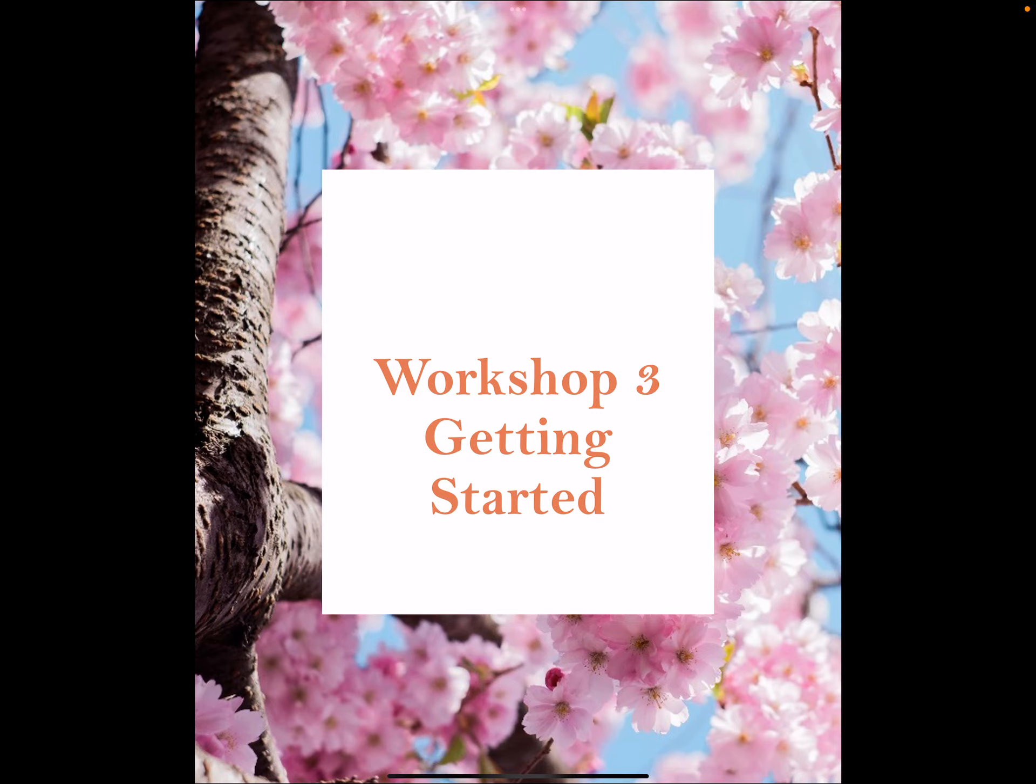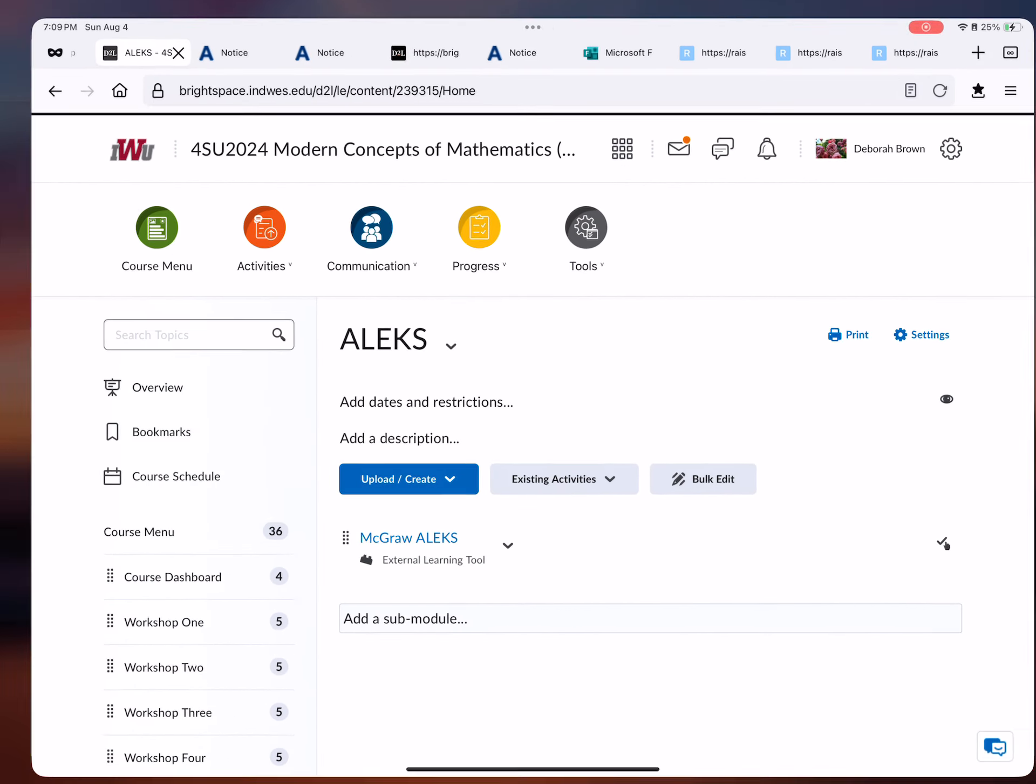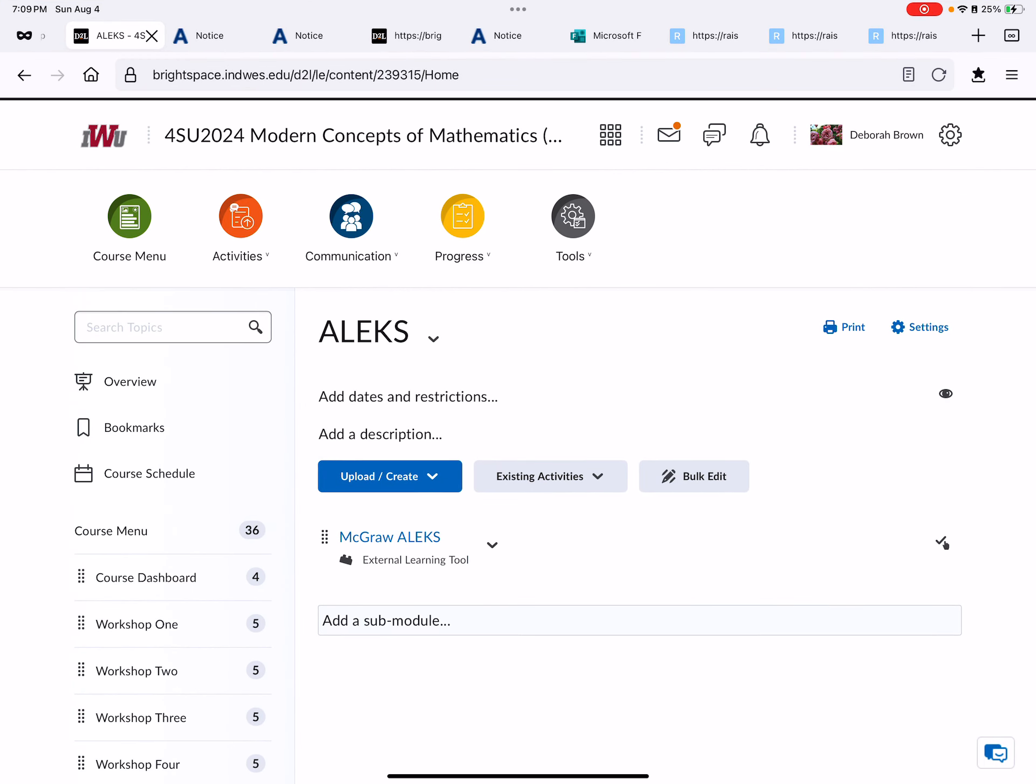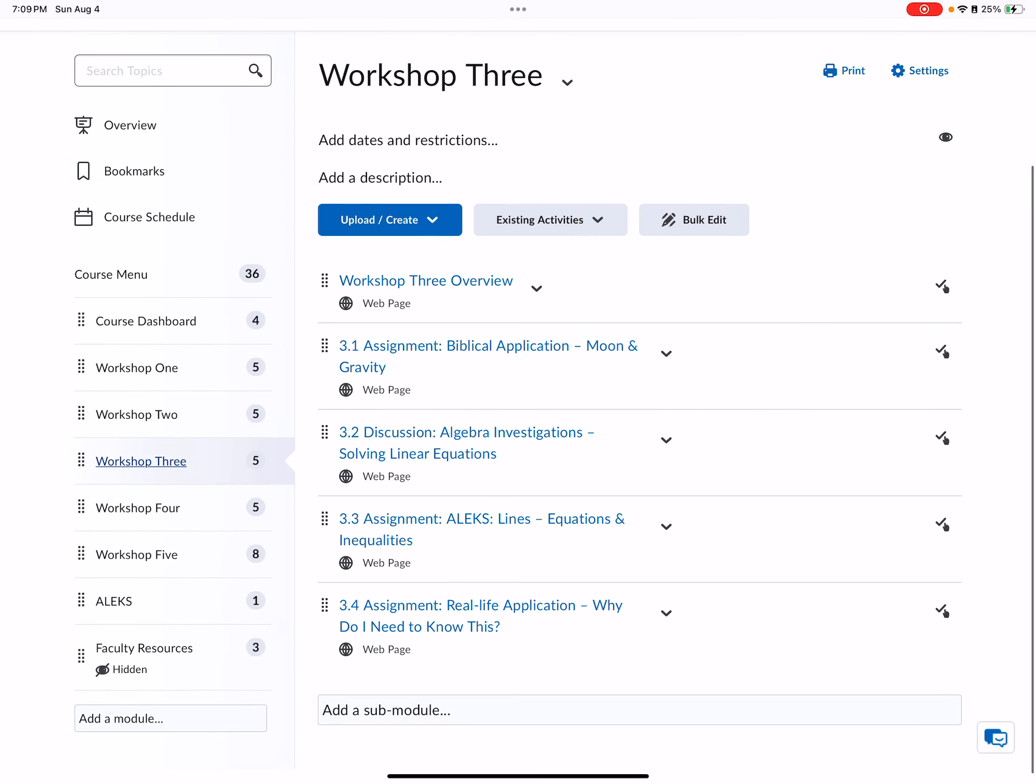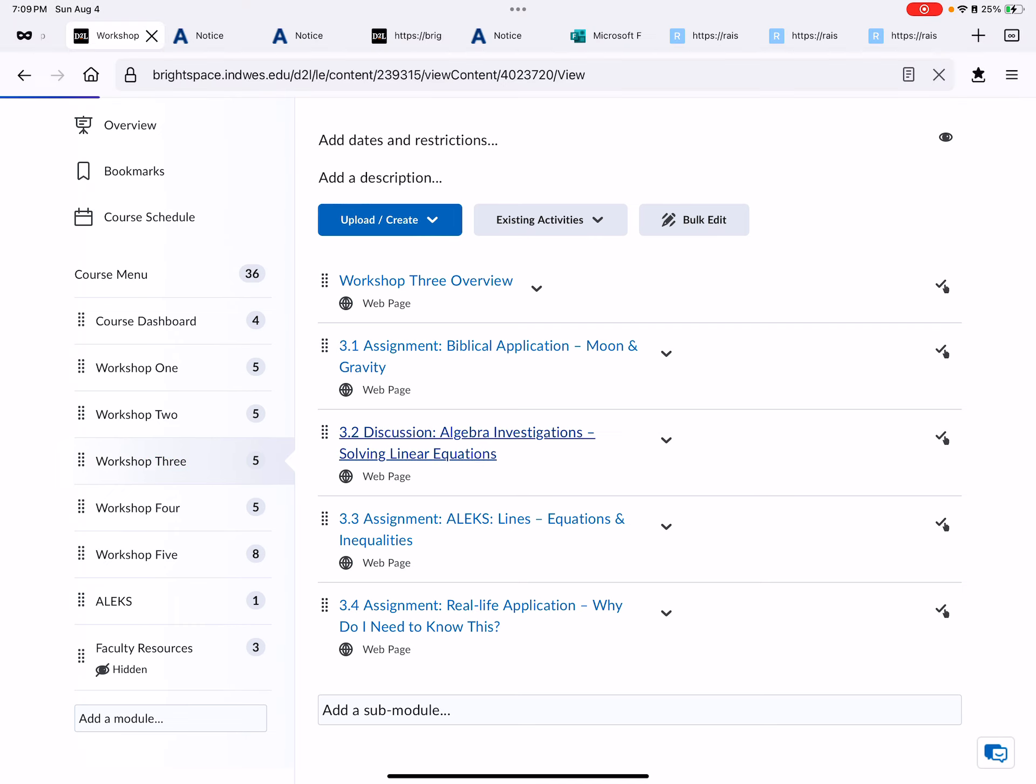Workshop three, getting started. Log on to the portal, click Workshop Three. Let's talk about what we have. The first one is the biblical assignment - you answer the questions, upload them, and send them to me.